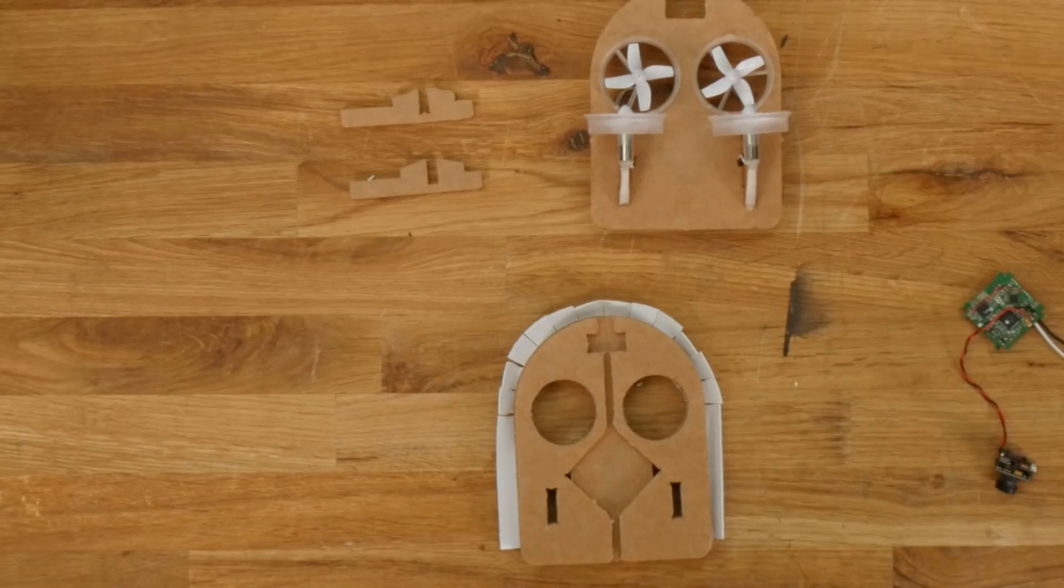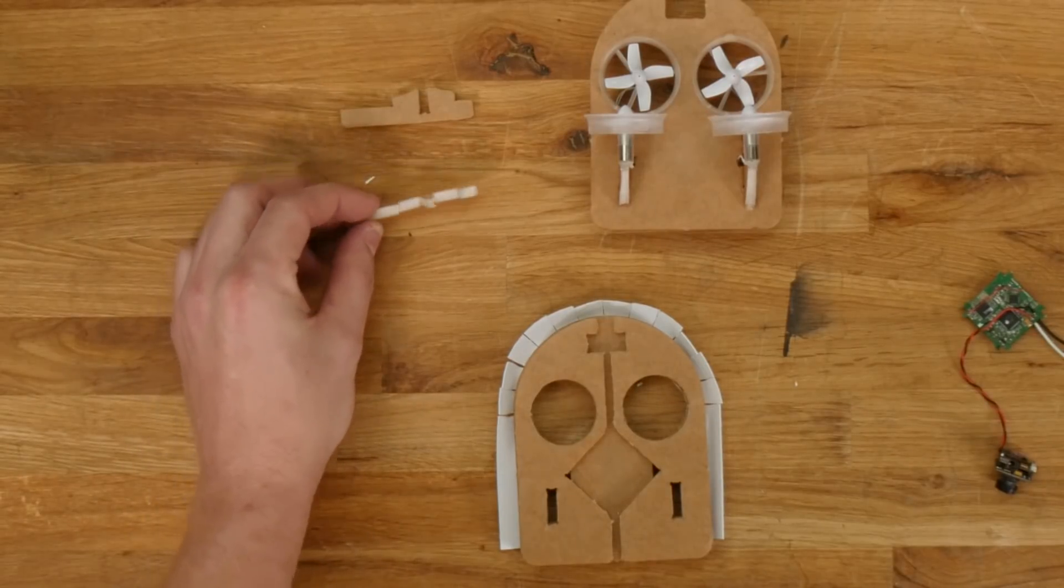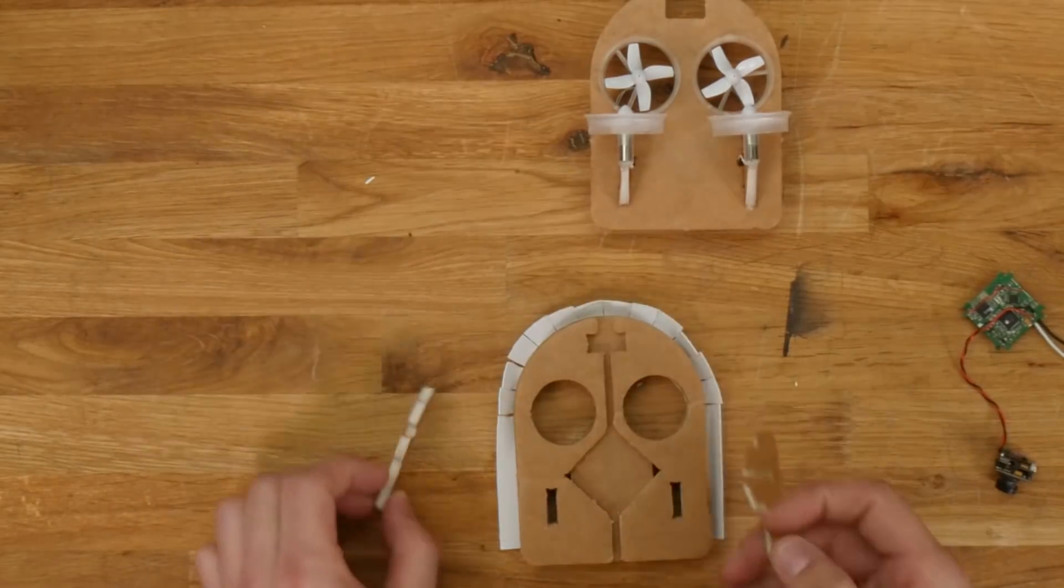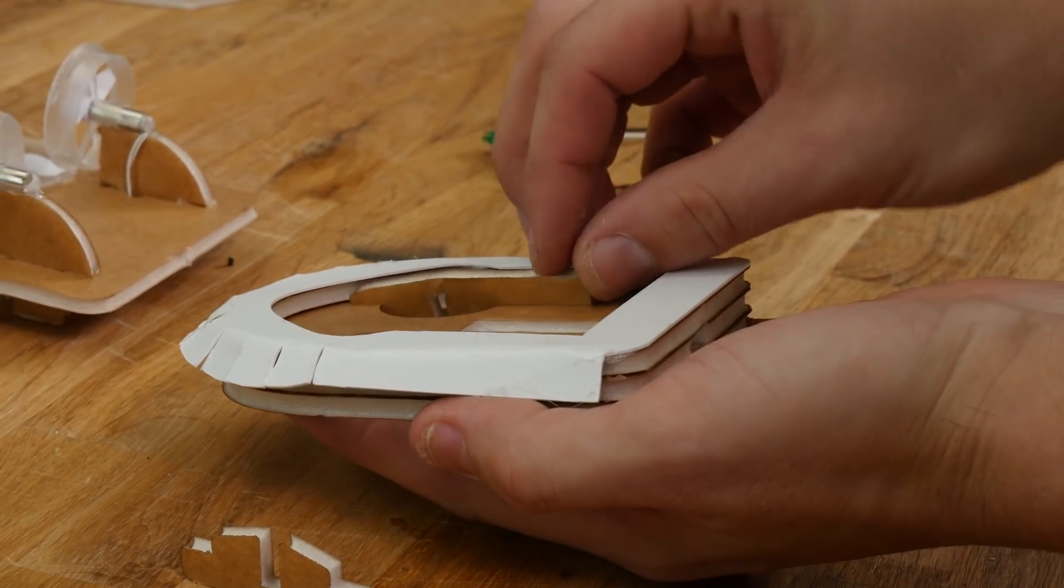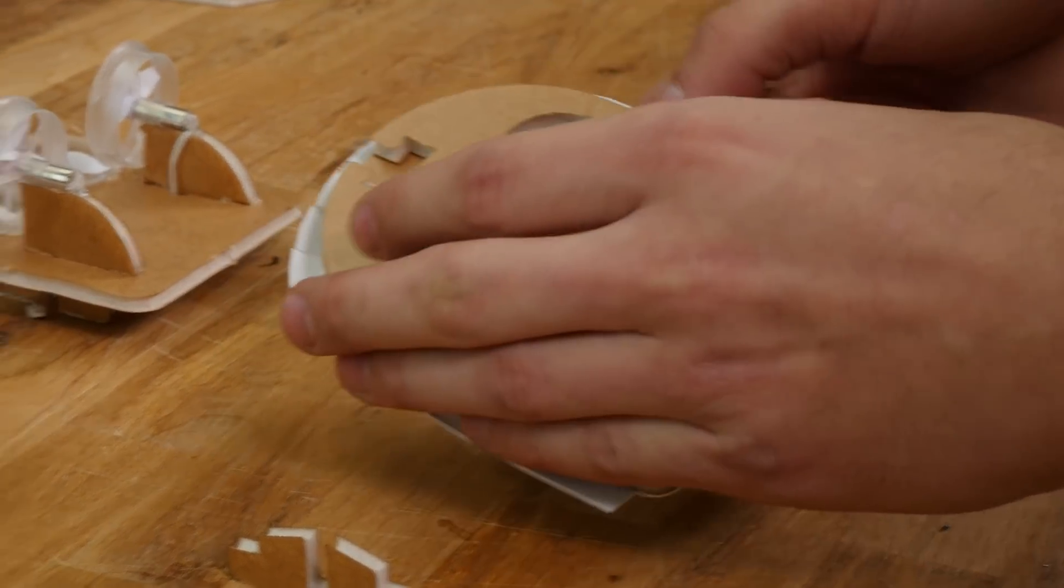Now, if your motors don't have ducts, we have these two pieces right here. You can install them into the bottom of your aircraft, so you can install a motor.